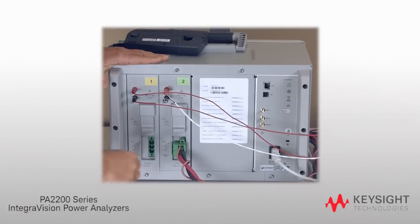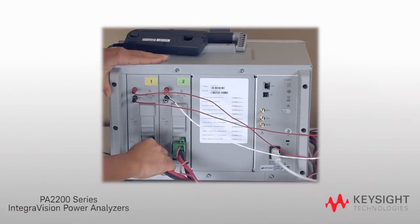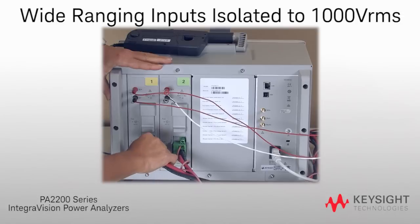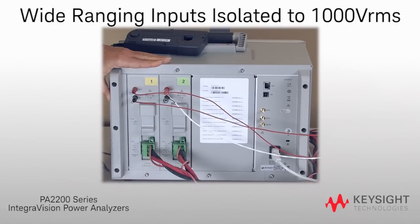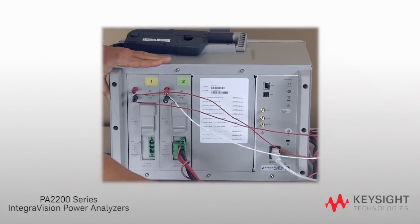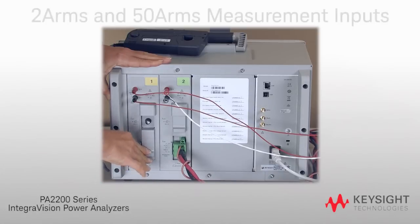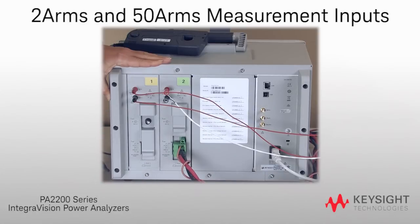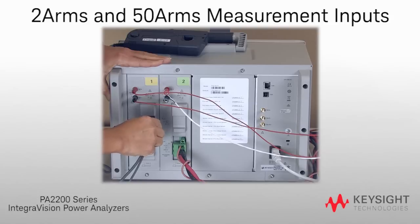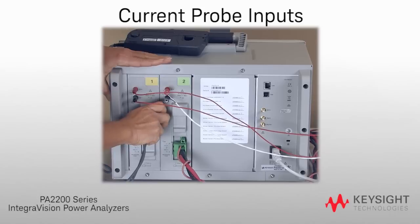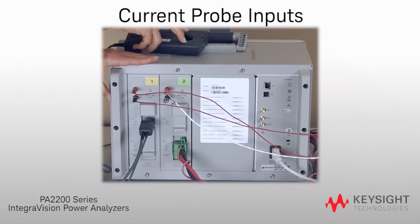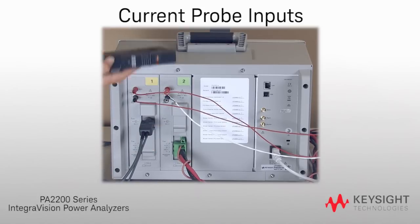With the IntegriVision Power Analyzer, you can address multiple test scenarios thanks to the flexibility of wide-ranging inputs that are isolated to 1000 volts RMS. To ensure the best accuracy, IntegriVision offers both 2 amp RMS and 50 amp RMS direct current measurement inputs, standard on all channels. It also has an external sensor input that supports current probes and transducers up to 10 volt full scale.